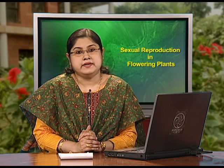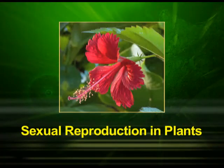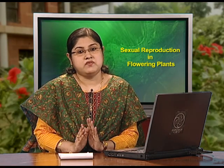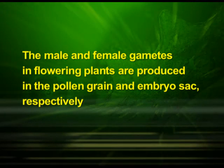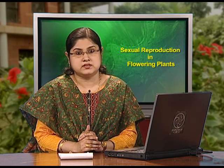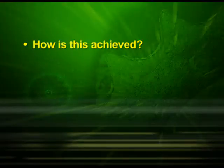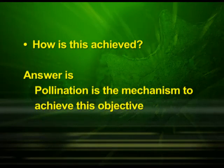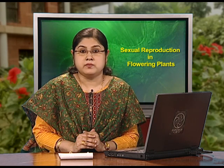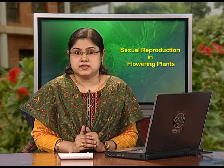Now let us start with the next part of the topic: sexual reproduction in plants. First of all, let us discuss pollination. We have already learnt that the male and female gametes in flowering plants are produced in the pollen grain and embryo sac respectively. As both types of gametes are non-motile, they have to be brought together for fertilization. The answer to how this is achieved is pollination. Pollination is the mechanism to achieve this objective.